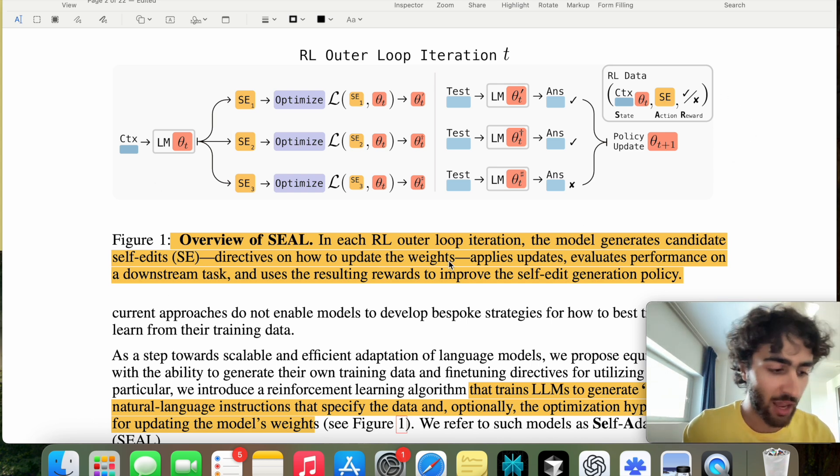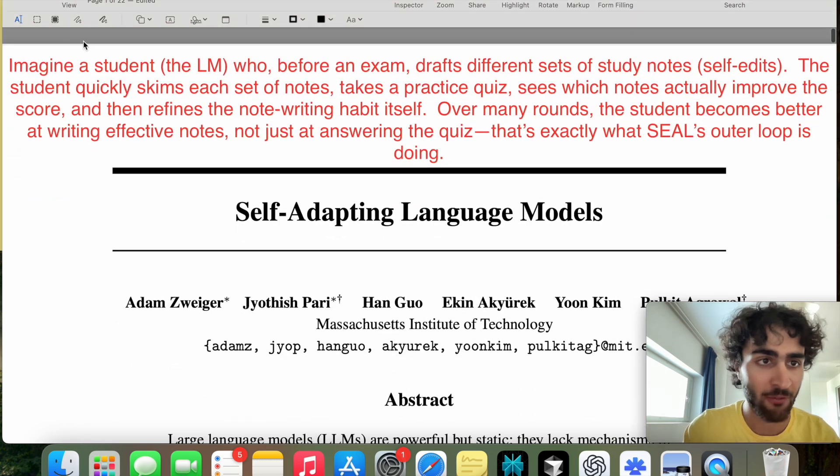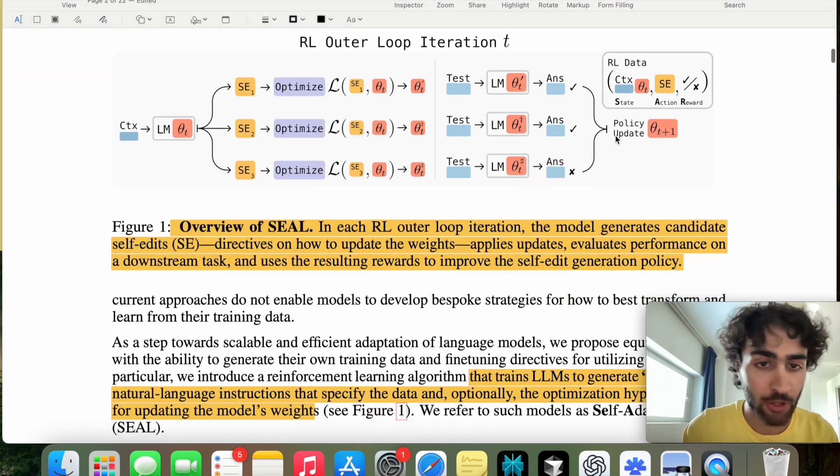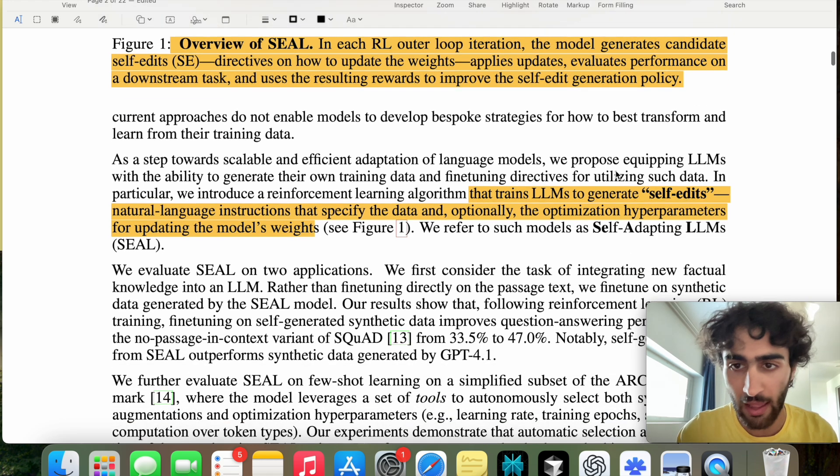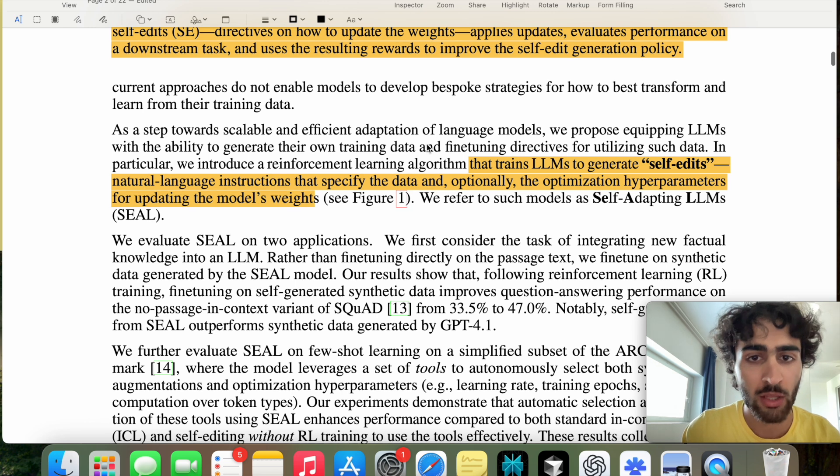If it's slightly foreign to you, you kind of can't grasp it, then I would just say fall back to this explanation, which is simpler for us to understand. But hopefully you did actually understand it. Let's just look here and see what they mean with self-edits. So they're saying that we train LLMs to generate self-edits, which are natural language instructions that specify the data, and optionally, the actual hyperparameters for updating the model weights.